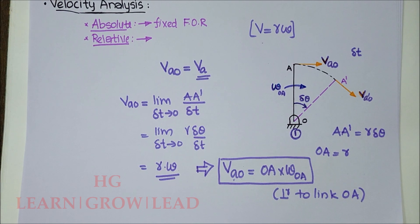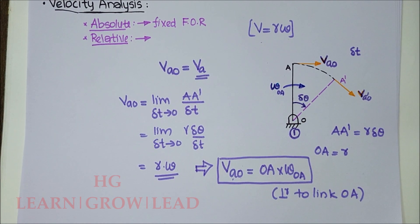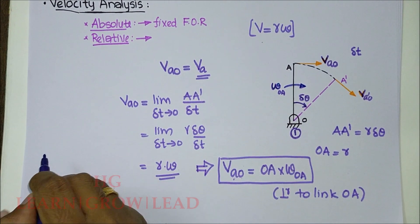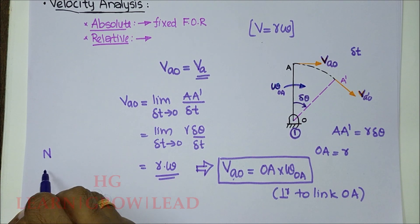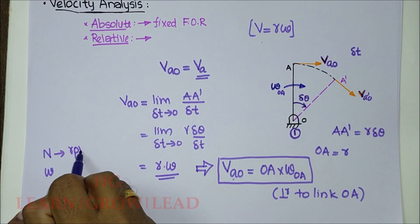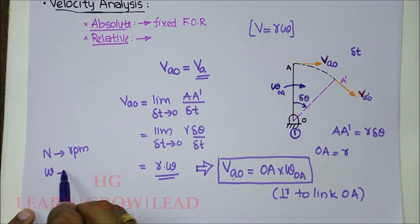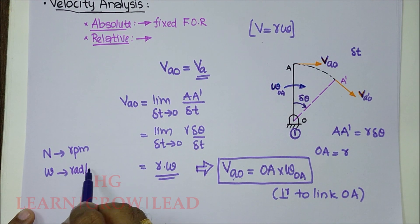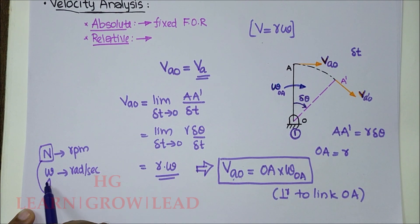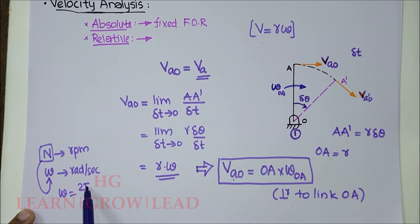For velocity analysis, we need to work with a proper suitable scale for the mechanism. We must work with known quantities — usually the speed N in RPM or RPS is given. From that we find omega, since omega equals 2·pi·N divided by 60, where N is in RPM.